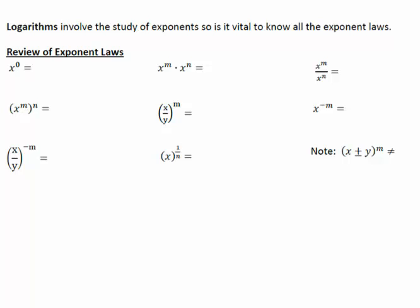X to the 0 — any base with a 0 exponent is always going to be 1. When we have x to the m times n, remember exponent on the inside and exponent on the outside, we would multiply those exponents. If we have x over y to the negative m, we could write negative m on each of those values, or we could take our fraction and write the reciprocal with the m.